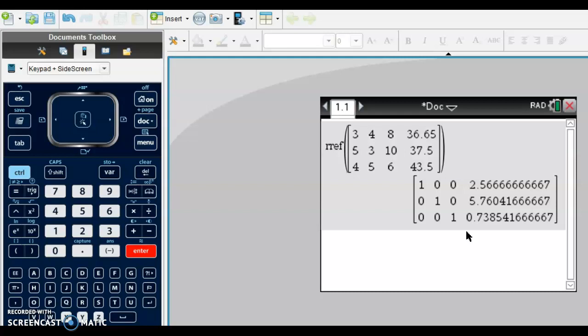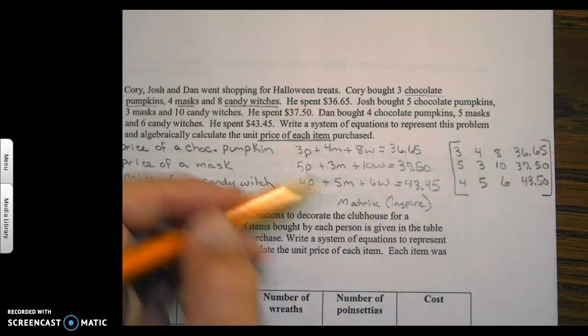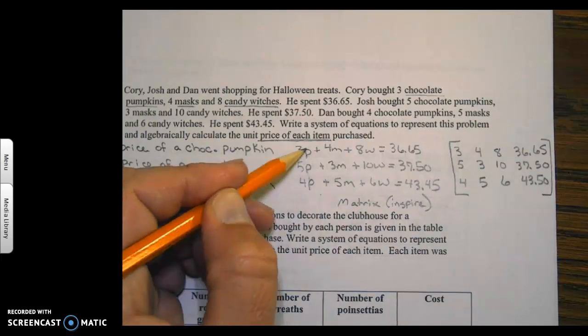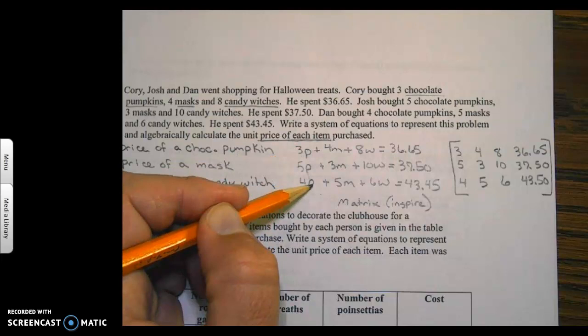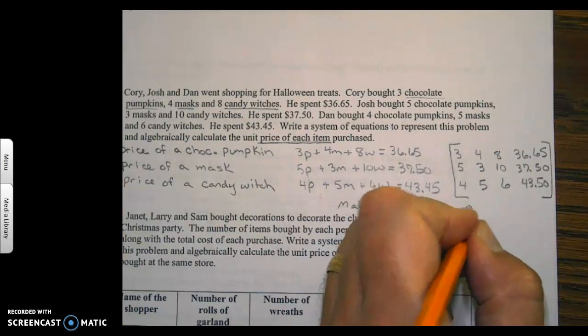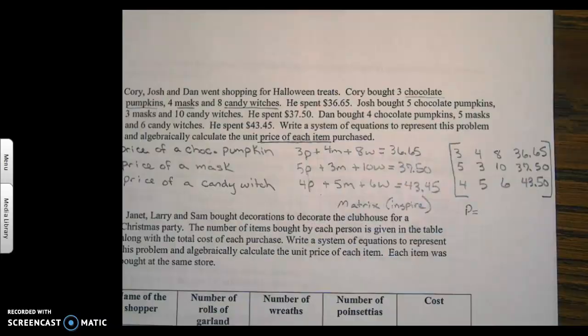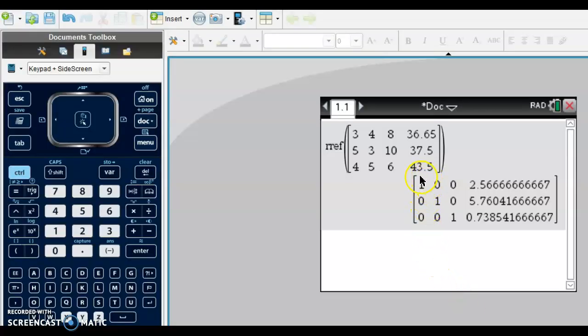This is how you read this. The first column represents chocolate pumpkins. The price of one chocolate pumpkin, you look for the 1 in the first column. That's going to represent the price of one chocolate pumpkin is $2.57, the cost of a chocolate pumpkin.